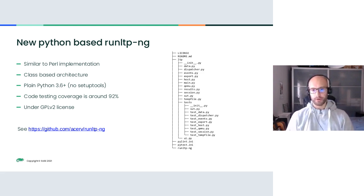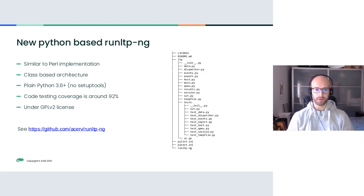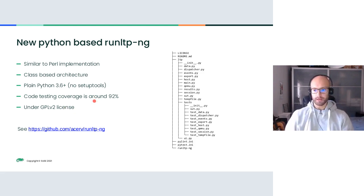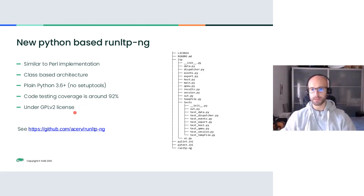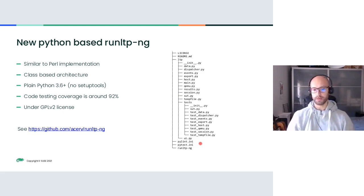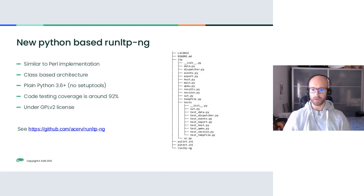We decided to build the new Python-based runltp-ng. It's pretty similar to the Perl implementation and is class-based. It uses plain Python 3.6+ without setup tools, so we won't use pip or virtualenv — we just run the script which is our entry point. Code test coverage is around 92%, it's under the GPL version 2 license, and we plan to integrate it into the LTP upstream in the near future.